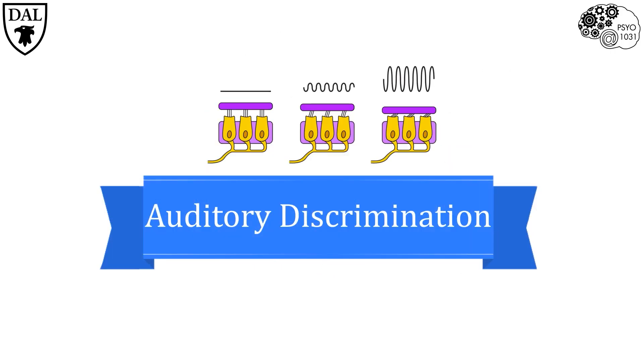Not only is the cochlea able to sense sound waves, but it is able to distinguish between specific properties of sound, such as pitch and amplitude. This information then travels along the auditory nerve to the brain where it can be further processed and perceived.